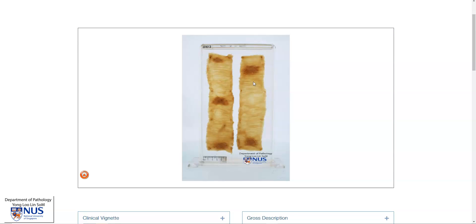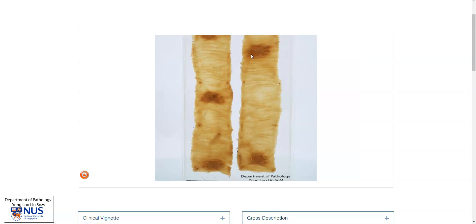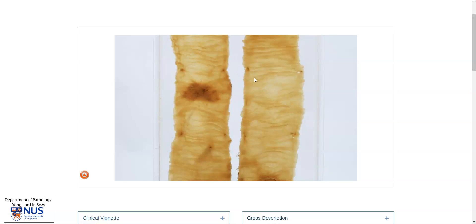In summary, this is an example of ulcerative tuberculosis in the small bowel, which gives rise to transverse ulcers in the small bowel mucosa. Thank you.